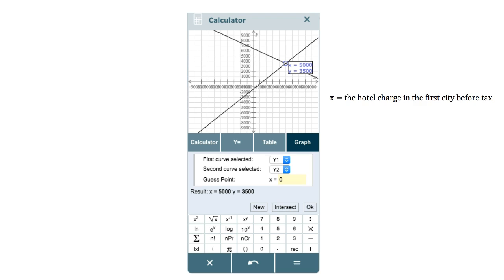This means that the hotel charge in the first city before tax was $5,000, and the hotel charge in the second city before tax was $3,500.